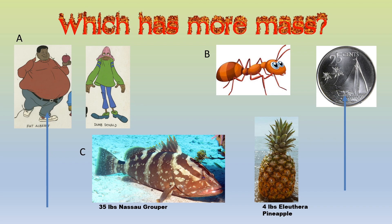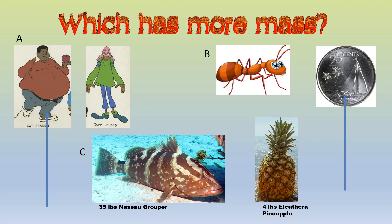Let us look at C. Is that a Nassau grouper? How can we tell that is a Nassau grouper? It has a distinct spot on its tail. Is that a pineapple all the way from Ilustra? Yes it is. Which one has more mass? The grouper. Very good.